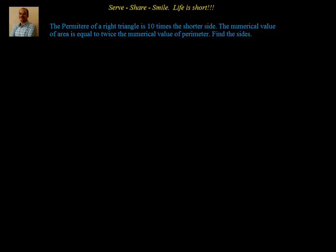Hello friends, welcome back. Arti welcome to you. In this session let's try to solve this interesting example related to quadratic equations for 10th grade students. The problem goes like this: the perimeter of a right angle triangle is 10 times the shorter side. The numerical value of area is equal to twice the numerical value of perimeter. Find the sides.